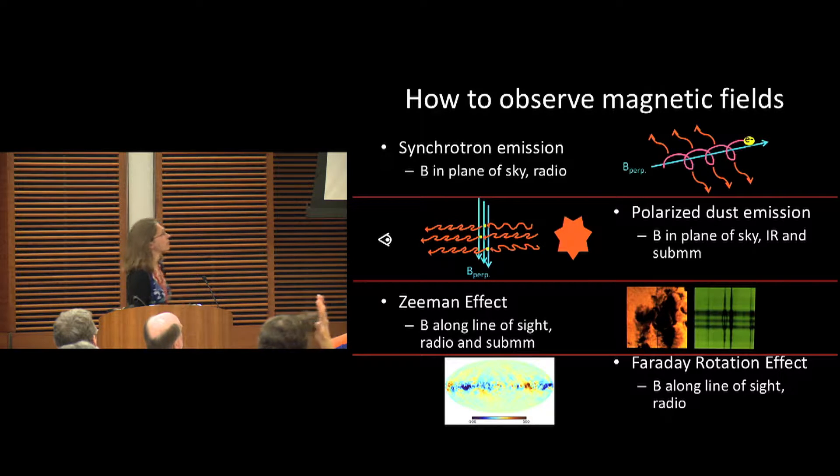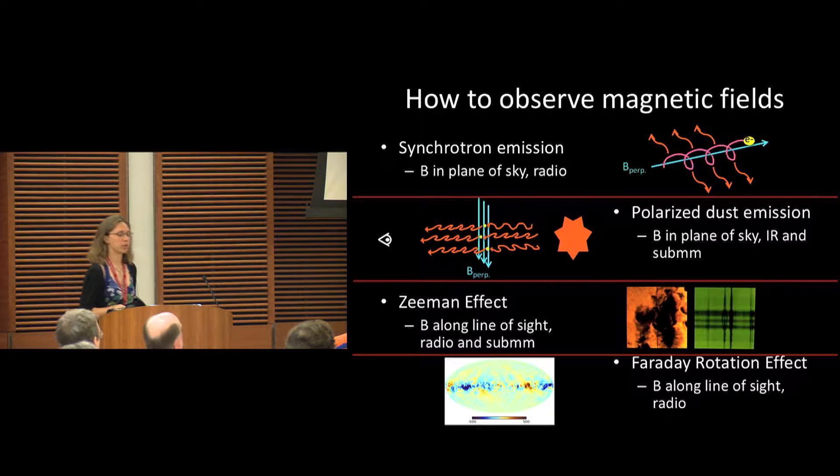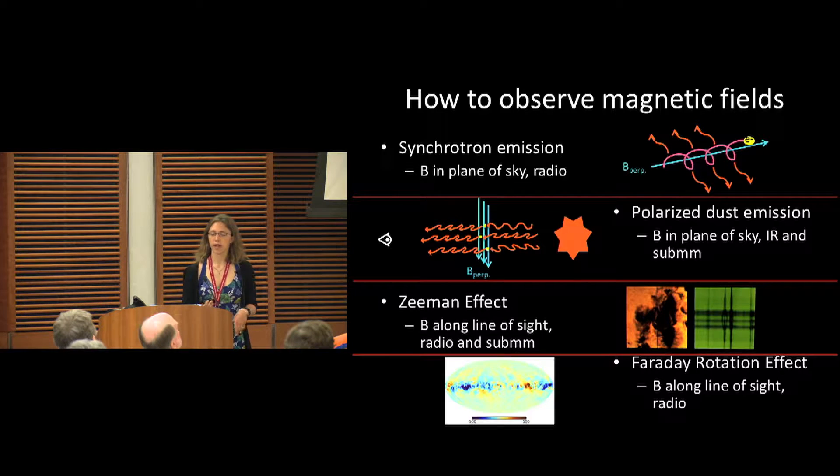Just a review of how we can get this information. Most of it comes from synchrotron emission, non-thermal radio emission. This gives us a sense of the plane of sky magnetic field.